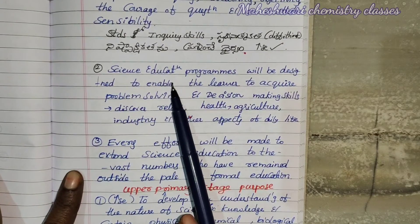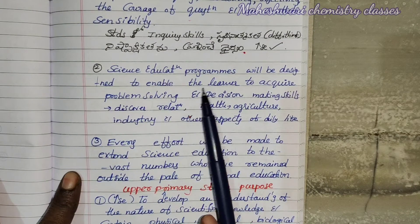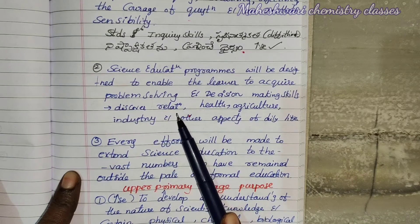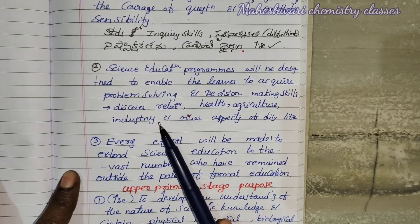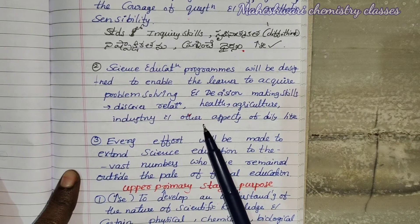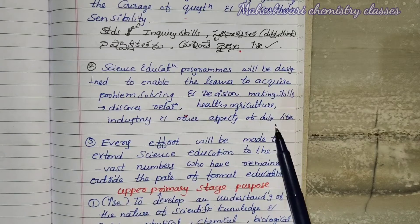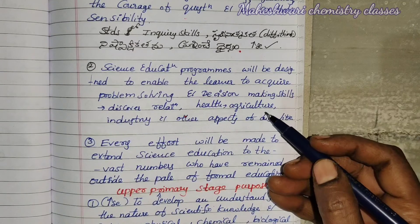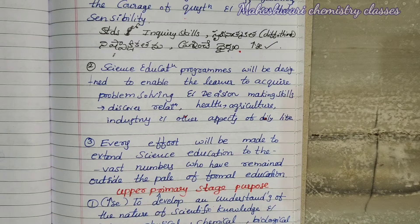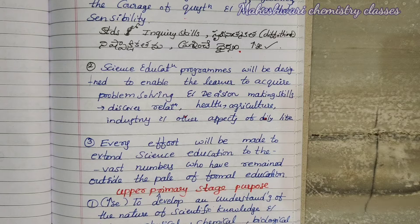The second aim: science education programs will be designed to enable the learner to acquire problem-solving and decision-making skills, and to discover relationships between health, agriculture, industry, and other aspects of daily life.